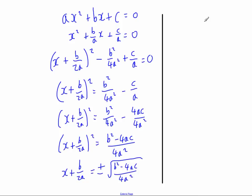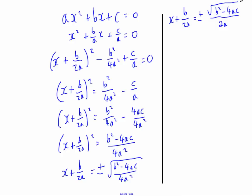So square rooting the numerator and denominator separately: x plus b over 2a equals plus or minus. The top line — b squared minus 4ac — cannot be simplified, so it stays as the square root of b squared minus 4ac. The bottom line, 4a squared, is a perfect square: its square root is 2a. So the denominator becomes 2a. As you can see, the quadratic formula is really starting to form.